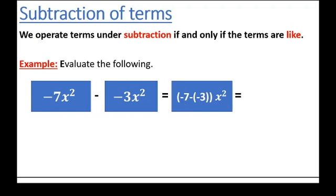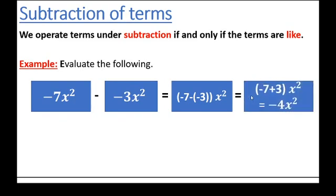The first thing we do is operate the coefficients: minus seven minus of minus three equals minus seven plus three. This is then multiplied by the common term x squared, giving us a simplified form of minus four x squared. This is how you subtract like polynomial terms.